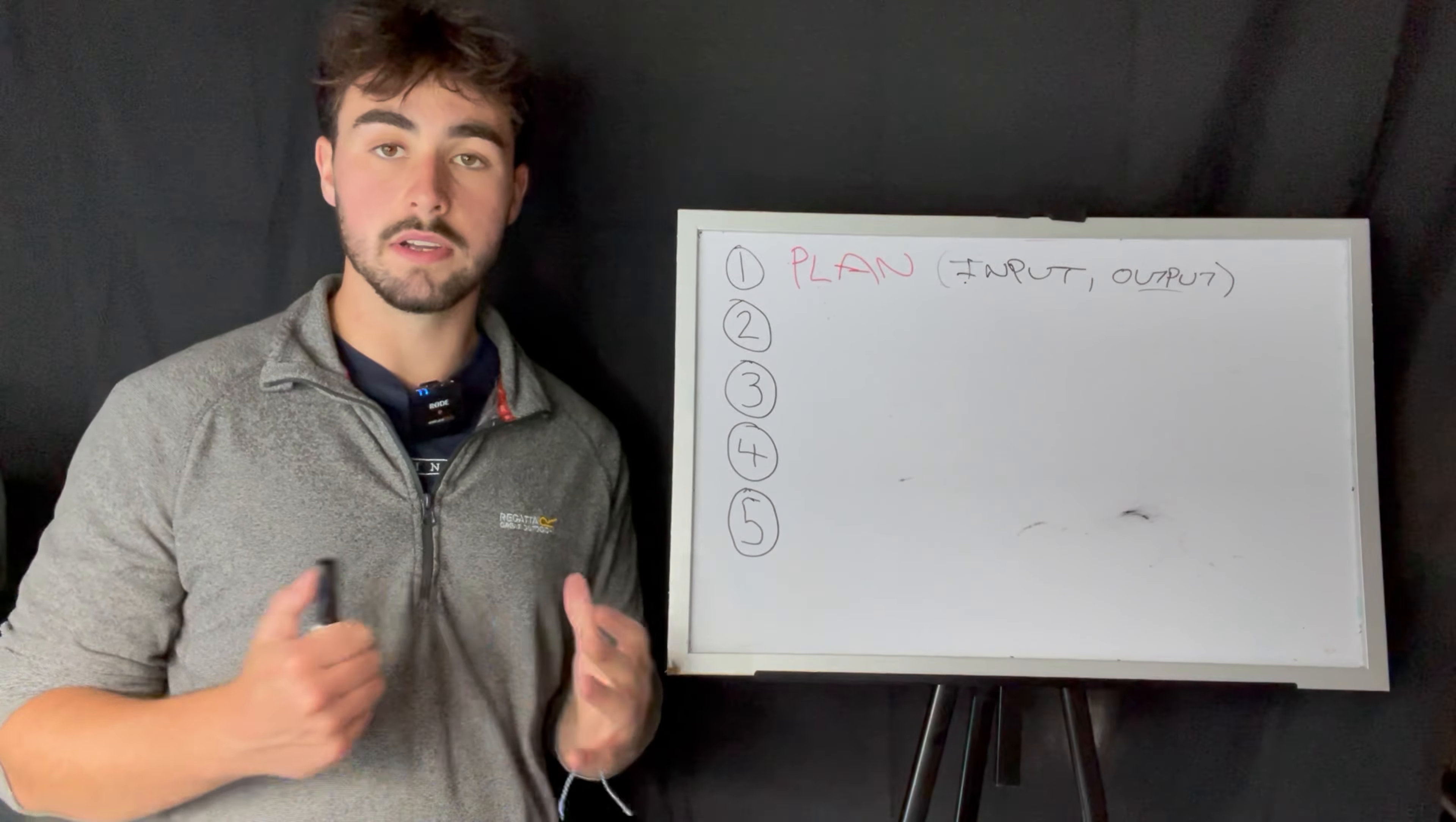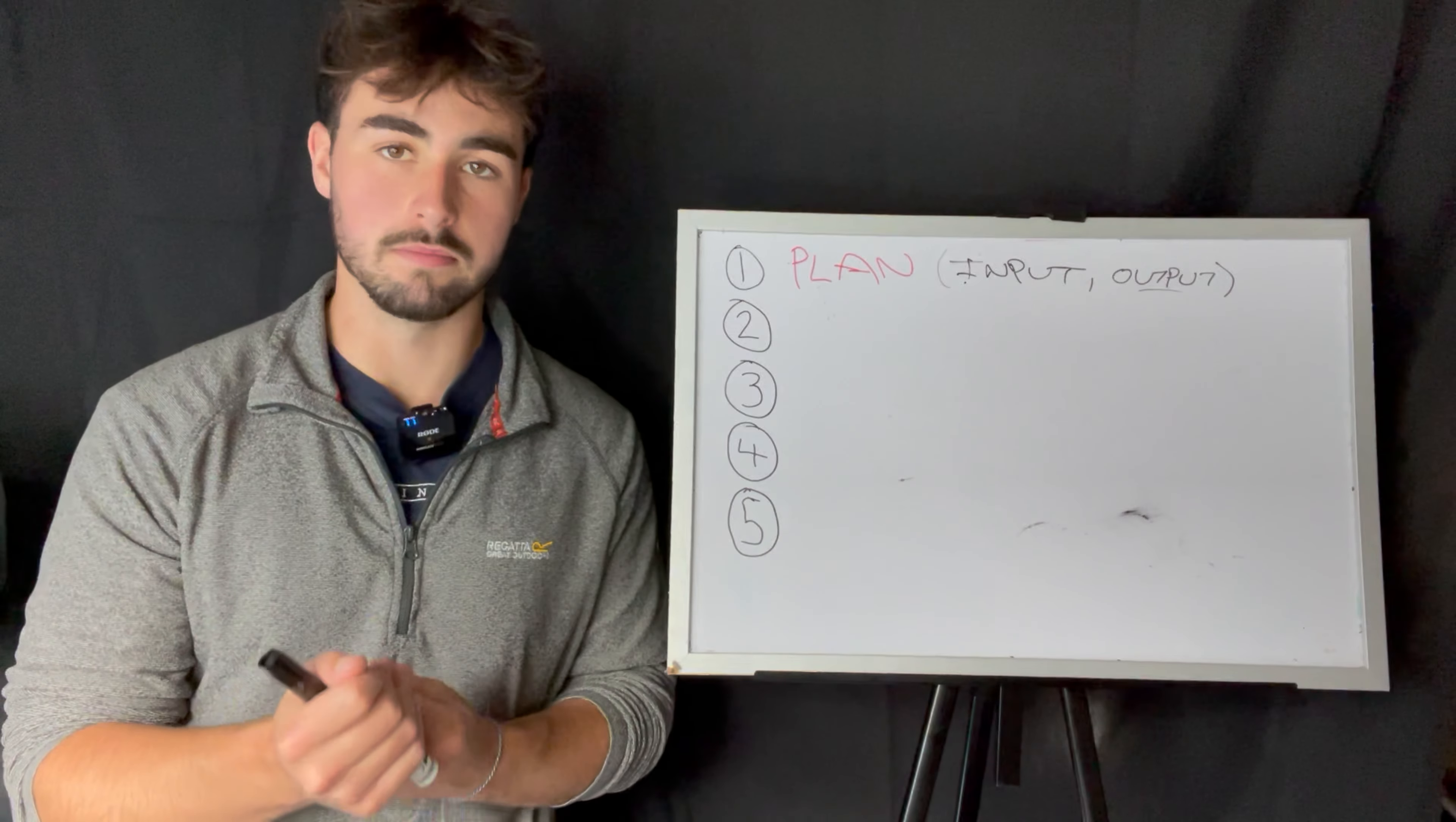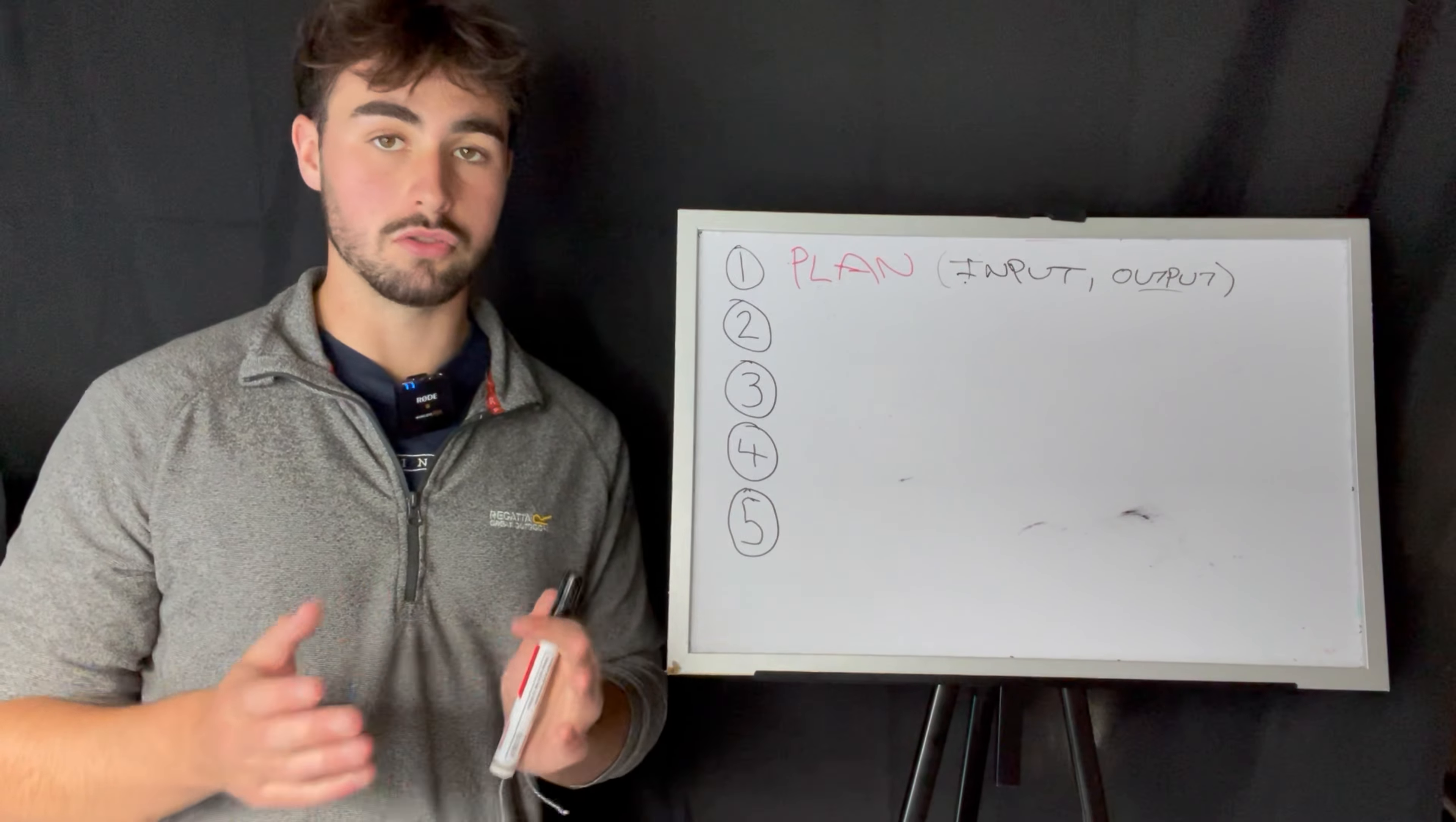If I give you an example from my life, the output that I wanted was a certain amount of subscribers, a certain grade from university, and to gain a certain amount of muscle on my frame. But these are not controllable.